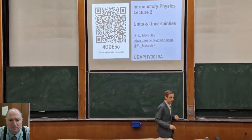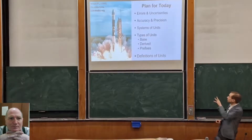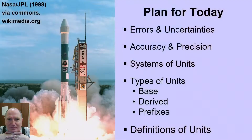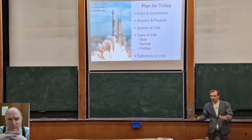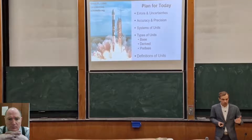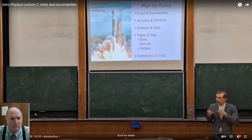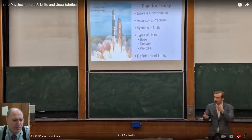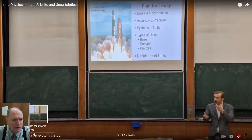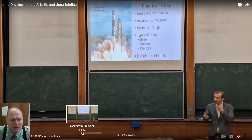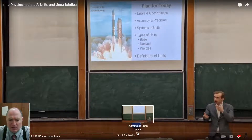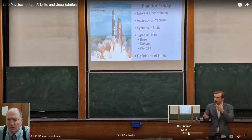Let's take a look at what's on the menu for today. The plan is to start with errors and uncertainties. We're also going to look at accuracy and precision. So I just noticed these — looks like somebody took the time to put markers in the video. So you see these little markers here. We could go to what we want: accuracy and precision, random and systematic uncertainties, systems of units, types of units, prefixes, history of units. I think I'm interested in the mix-up with milligrams. Let's go to that.